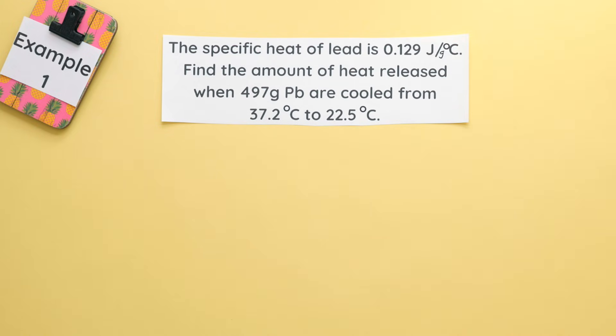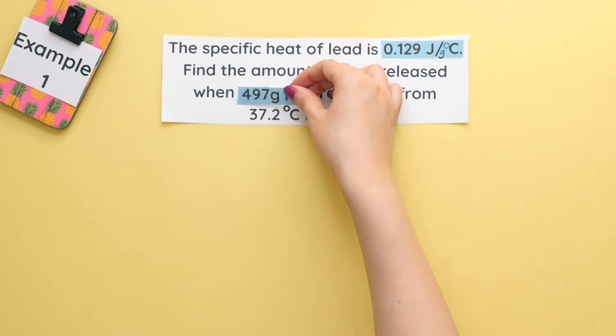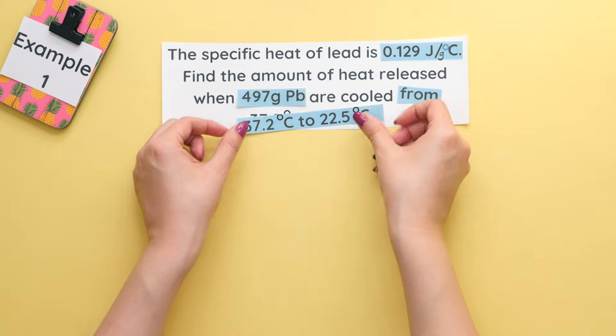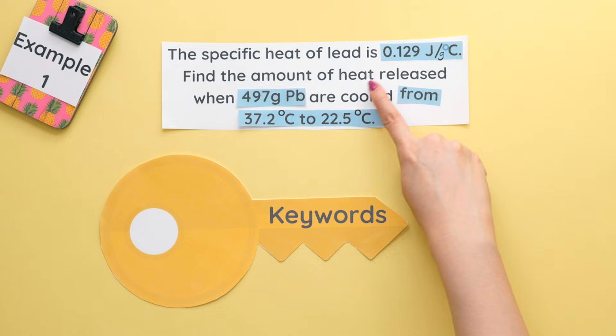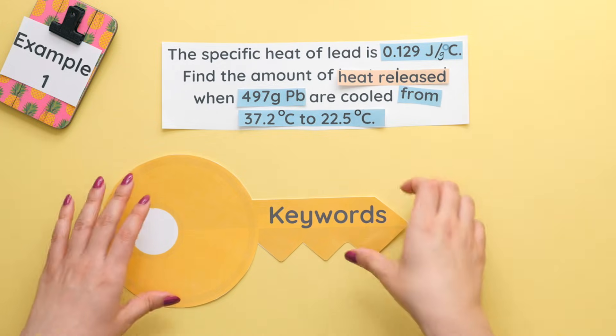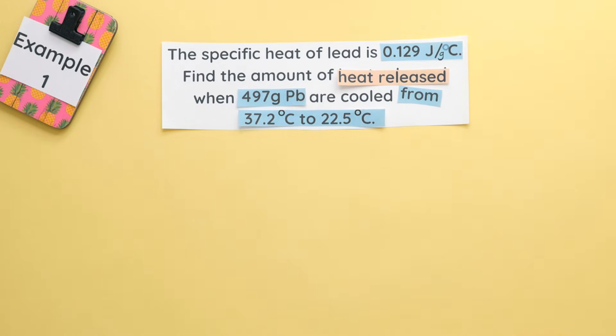Let's identify what we're given and what we're finding. We are given our specific heat capacity, our mass, and our initial and final temperatures. From and to are our key words here. From means that's our initial temperature and to means that's our final temperature. We are finding the heat released. The fact that this says released means our answer will be negative.